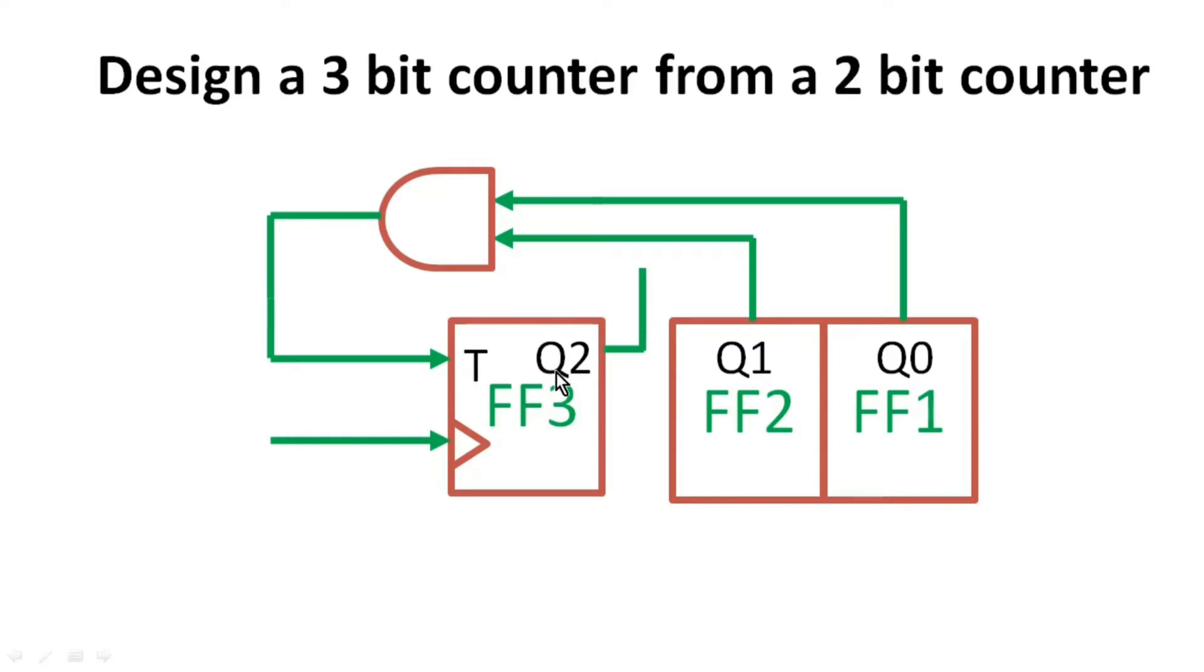Q2 is output of T flip-flop. I have used T flip-flop here because I know when the input of T flip-flop is high, Q2 toggles, and I also know that when Q1 and Q0 both are high in the immediate next cycle Q2 should toggle.